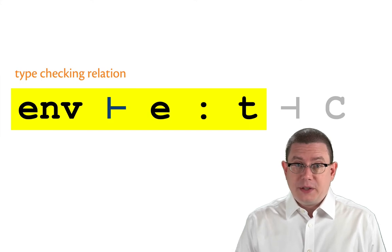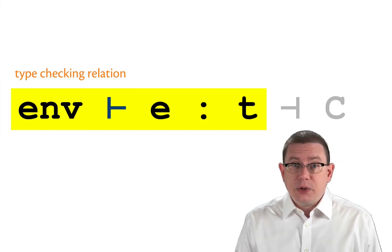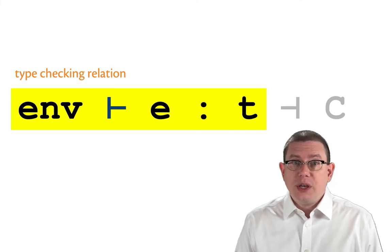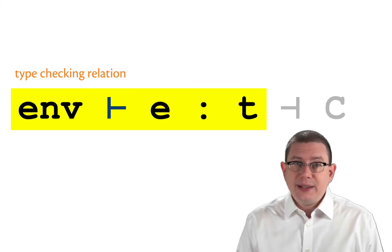So the first piece of this looks exactly like the type checking relation that we had before. We have a static environment that shows an expression E has type T.